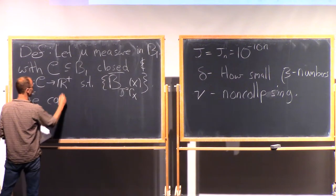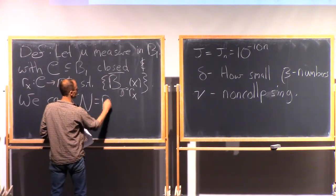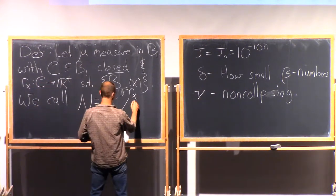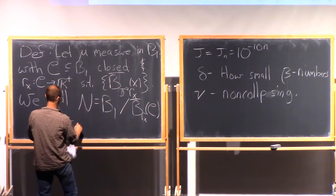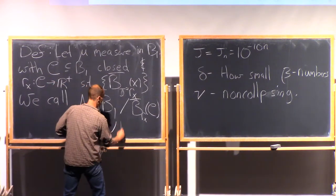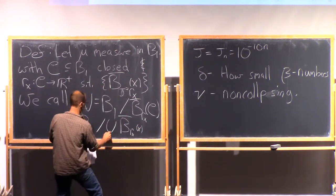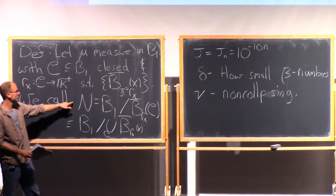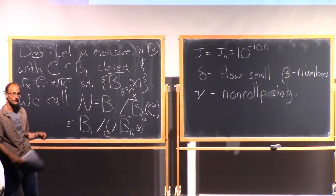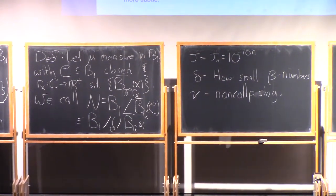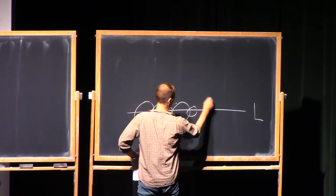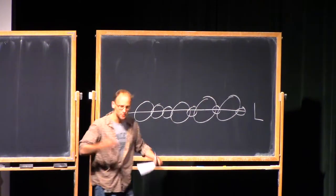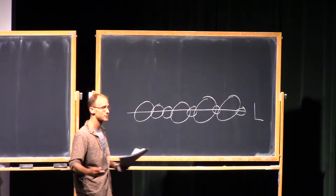So what I'm saying here is that the balls at these points centered here may not be disjoint, but they're basically like a Vitali disjoint. They're almost disjoint. You drop some definite factor, and they're disjoint. The second constant that's going to appear here is a delta. The delta is going to represent how small the beta numbers are. So how closely this measure is going to be to being contained inside L-dimensional affine planes.